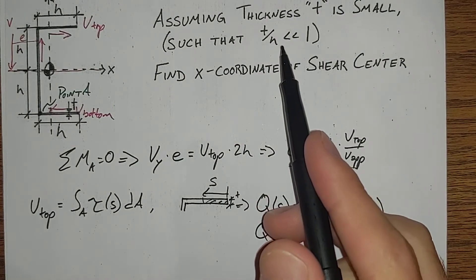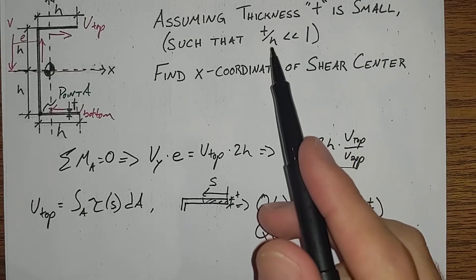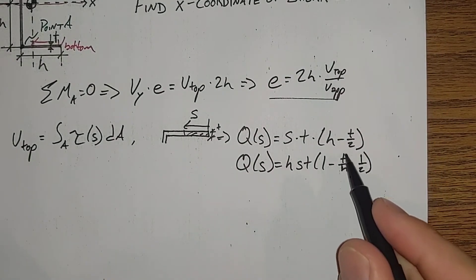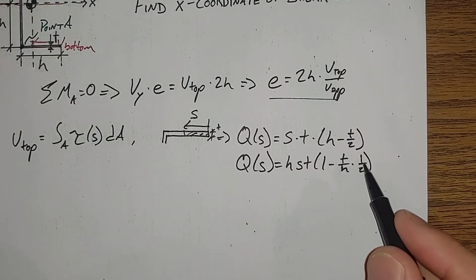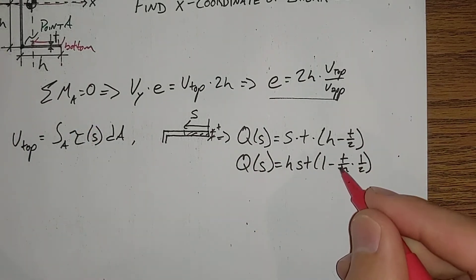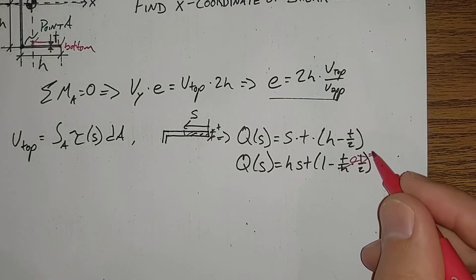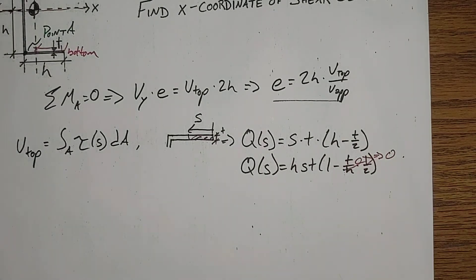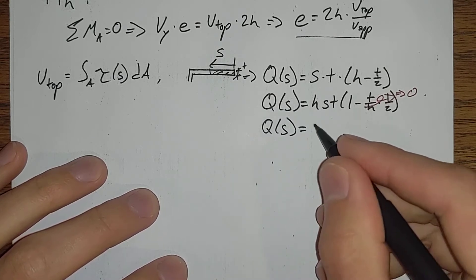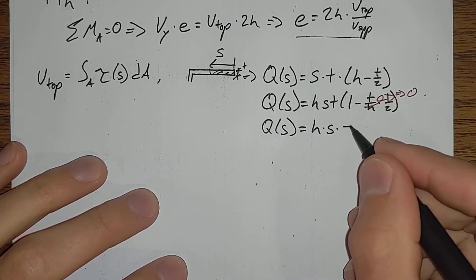We set up here, we're assuming t is small, such that t over h is much less than 1. If t over h is much less than 1, then half of t over h is definitely much less than 1. We are going to assume that that goes to 0. Making us have q(s) is just equal to h times s times t.